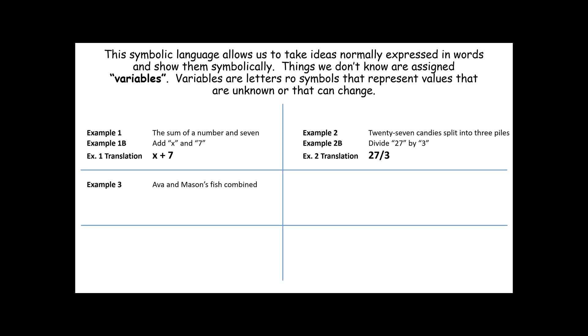Ava and Mason's fish combined. The word combine should bring to mind a particular operation — hopefully you realize it's addition. This is saying: add Ava's fish to Mason's. Since it's addition, I just use a plus sign. Notice, since I don't know how many fish Ava has and I don't know how many Mason has, I just use variables for those. Maybe Ava has 5 and Mason has 7, which would be a total of 12. Or Ava has 9 and Mason has 1, which would be a total of 10. I don't know those values, so I just use letters to represent them.